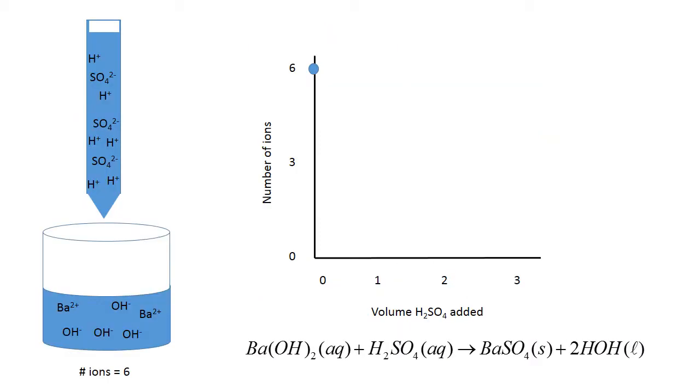Let's look at the simulation and try to see how this works. Up here in the burette I've got the sulfuric acid. I have barium hydroxide down here in the beaker. I've shown them as separated ions completely. I've shown the sulfuric acid as a sulfate ion and two hydrogen ions. I have three sulfuric acid molecules up in here and two barium hydroxide molecules down in here.